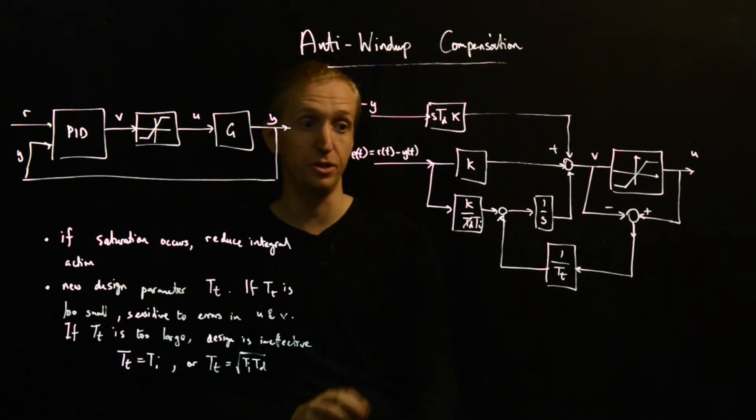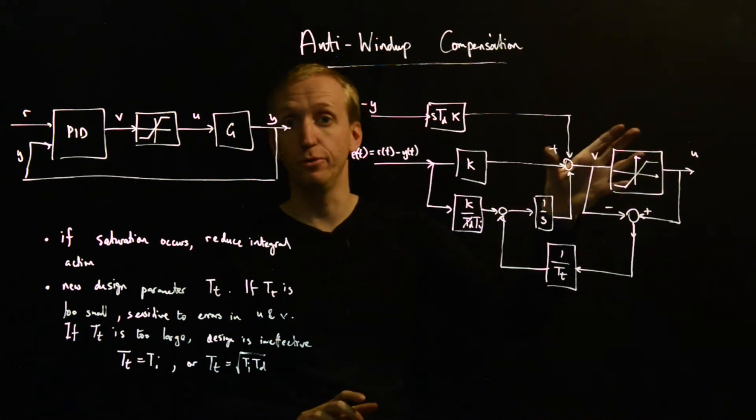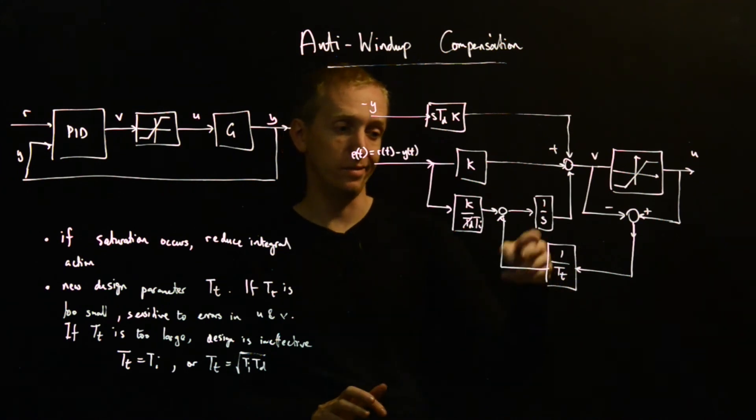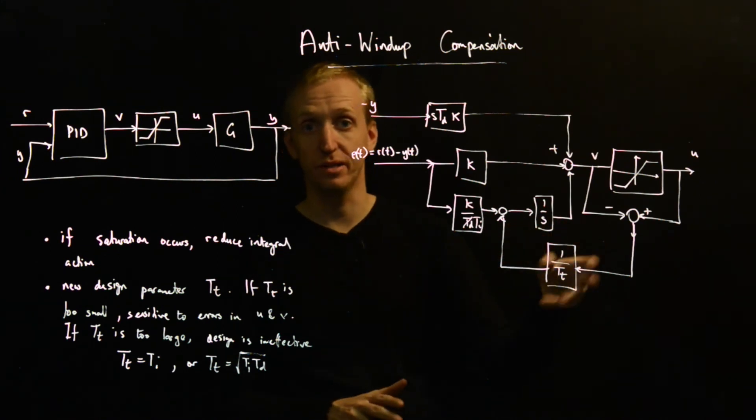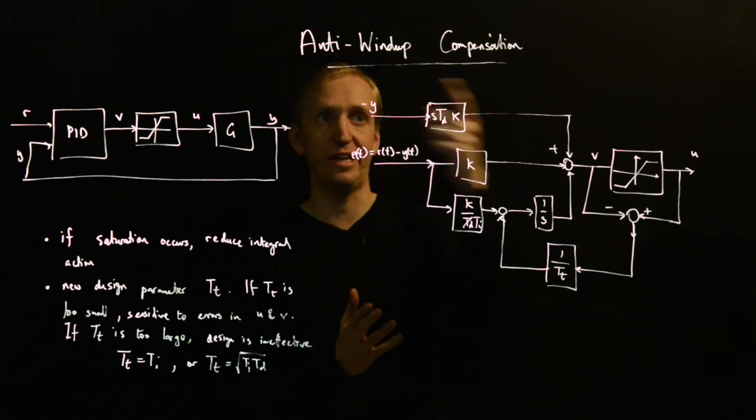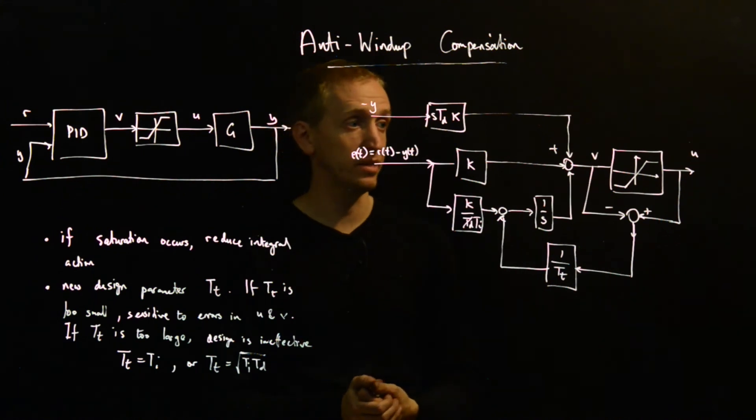So this is sort of a very high-level overview for how anti-wind-up works. The basic principle is you reduce the size of the signal that you're integrating up whenever you saturate, whenever you're in the saturation regime. And it introduces another design parameter, and you need to balance off this design to ensure effective anti-wind-up compensation while not introducing extra sensitivity to errors.